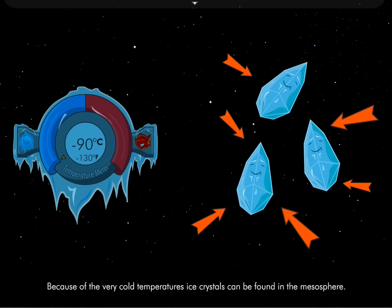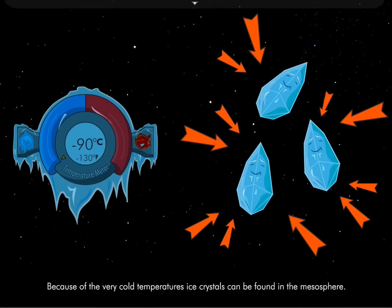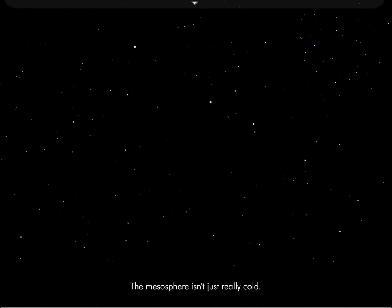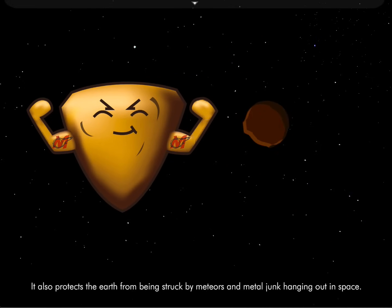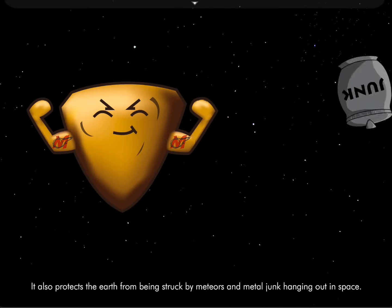Because of the very cold temperatures, ice crystals can be found in the mesosphere. The mesosphere isn't just really cold, it also protects the earth from being struck by meteors and metal junk hanging out in space.